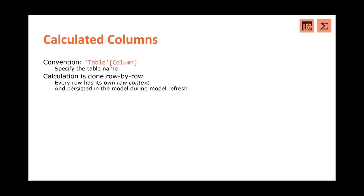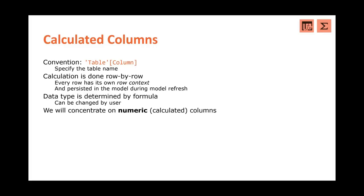Despite being called a 'calculated column,' it's calculated row by row. The formula is put for one column and repeated for all rows within the table. The result is also persisted in the model — so a new column takes up space, and the Power BI file gets bigger. Every time we refresh the model, all data is loaded and then the calculated columns are recalculated and stored again. The data type is automatically determined by the formula, and we can change it. In this 60 minutes, we'll concentrate on numeric calculated columns — simple ones, not text functionalities or time intelligence.